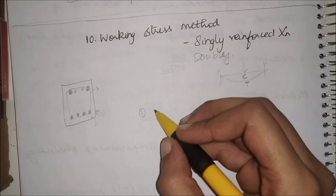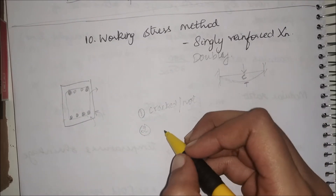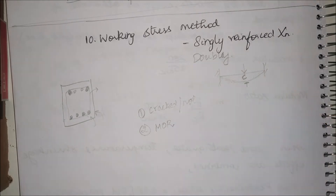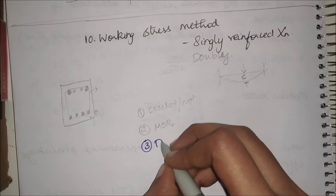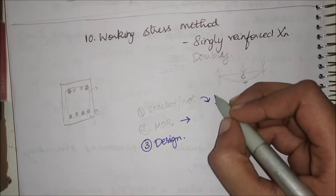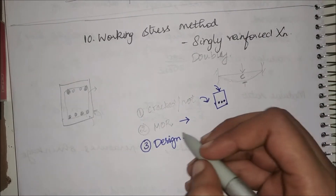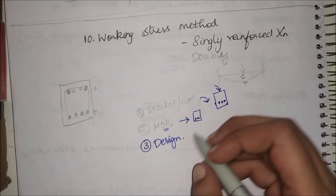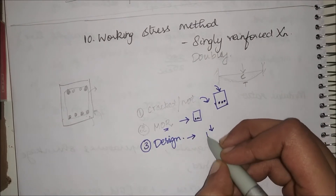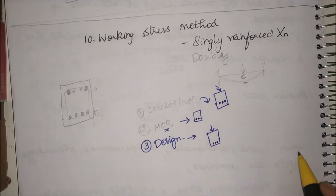Let us look into the types of questions that can be asked. The first type is to find whether the section is cracked or not. The second is to find the moment of resistance (MOR). The third is to design — they will give you the load alone and you have to arrive at the dimensions and the Ast.